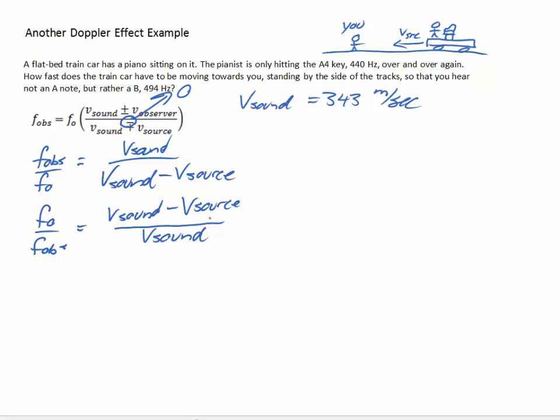So what I'm going to do is I'm going to take the reciprocal of both sides. Now having done that on the right-hand side, we have V_sound minus V_source over V_sound, so I can simplify that and say that is 1 minus V_source over V_sound.